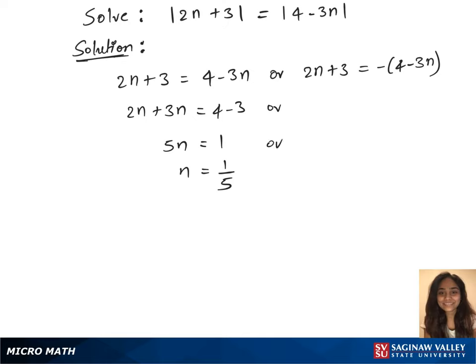To solve the second equation, we'll first use the distributive rule. So that is 2n plus 3 equals minus 4 plus 3n.